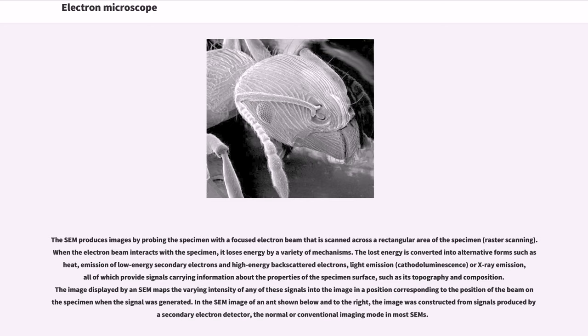The lost energy is converted into alternative forms such as heat, emission of low-energy secondary electrons and high-energy backscattered electrons, light emission, cathodoluminescence, or X-ray emission, all of which provide signals carrying information about the properties of the specimen surface,